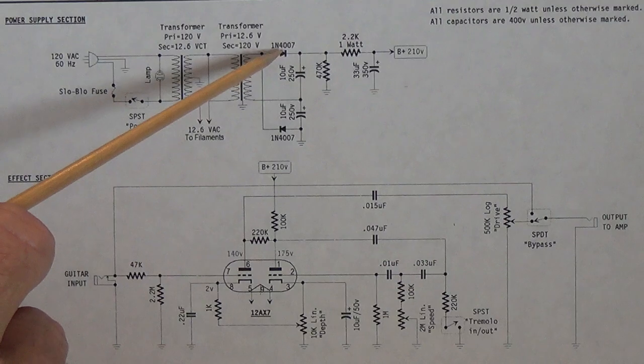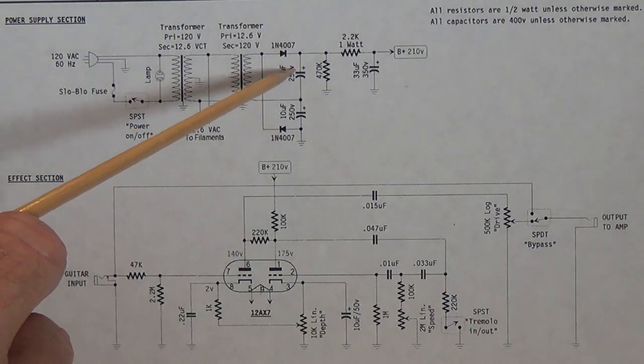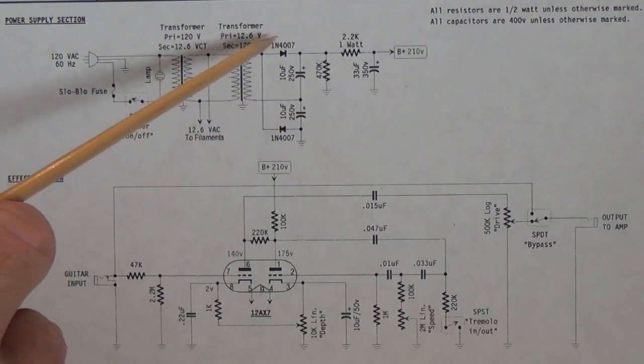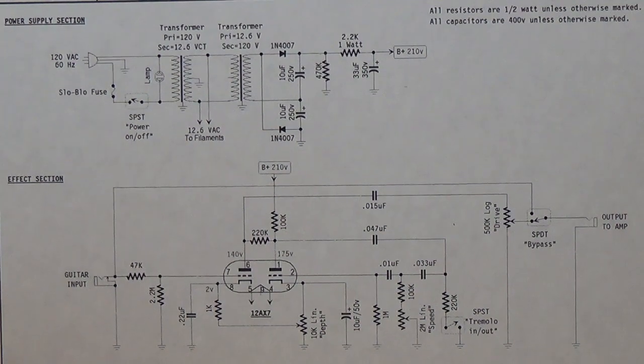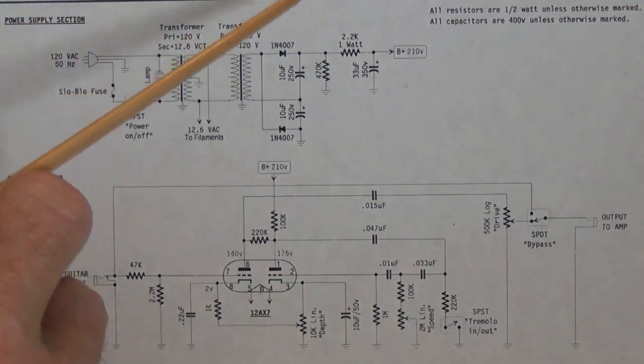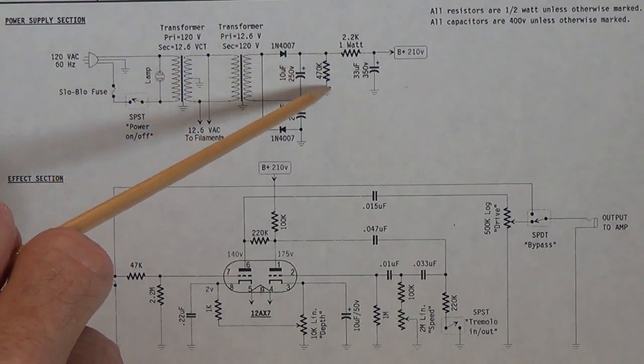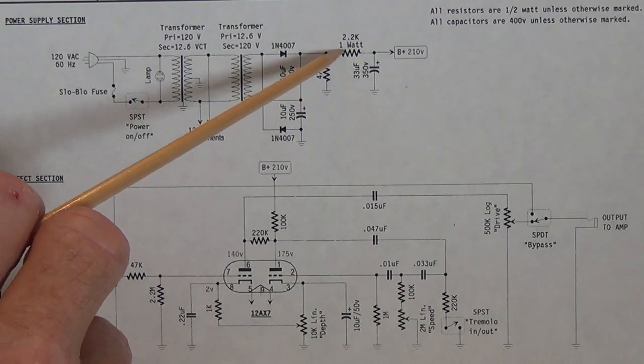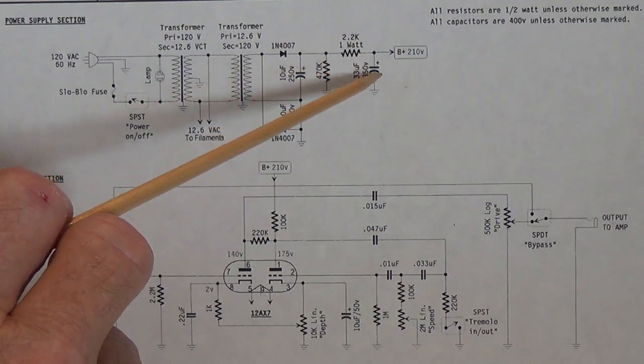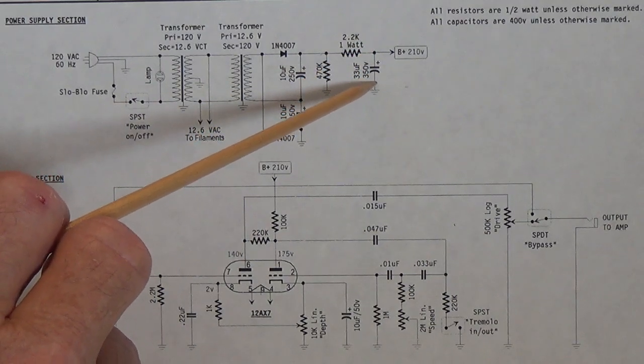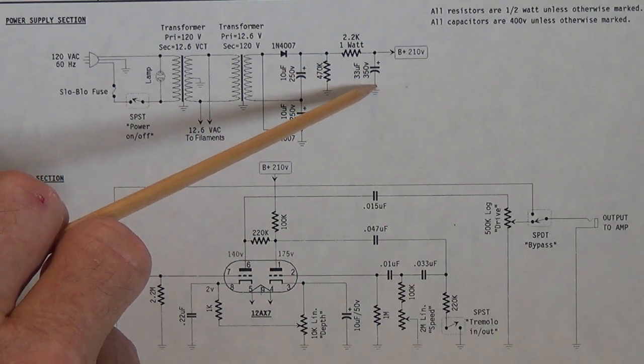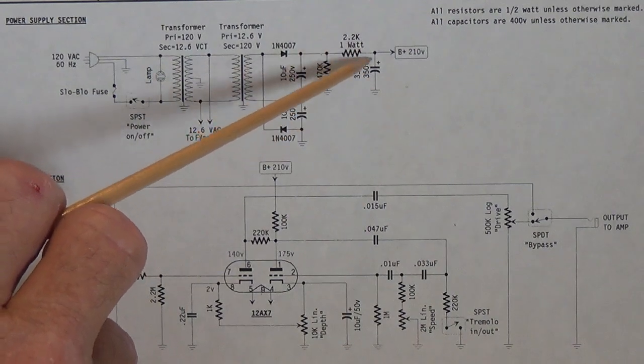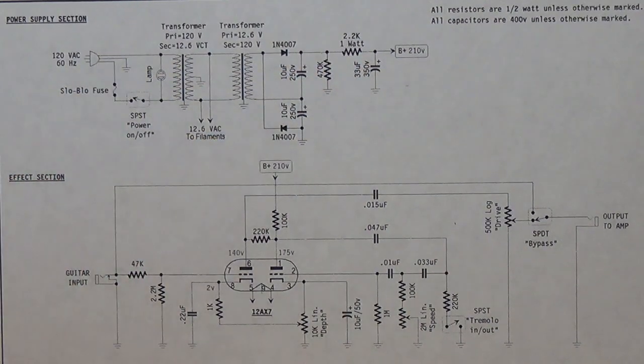Here are the two diodes and electrolytic capacitors which form the doubler network. In addition we see a high value resistor to ground, a medium value high wattage resistor in series just before the 33 microfarad filter capacitor that helps to smooth the output from our doubler network.